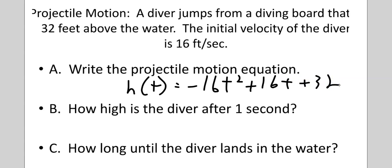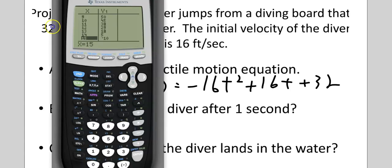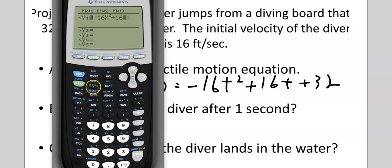So, height as a function of time equals, this is always going to be this. The initial velocity is 16 feet per second, and he was 32 feet above water. How high will they be after one second? So, you can just plug one in there. You know, one squared, negative 16, and one times 16 is 16, minus 16 is zero, plus 32. So, easy one to do, but we're still going to put it in a calculator because we're going to need it later. So, negative 16 x squared plus 16x plus 32.